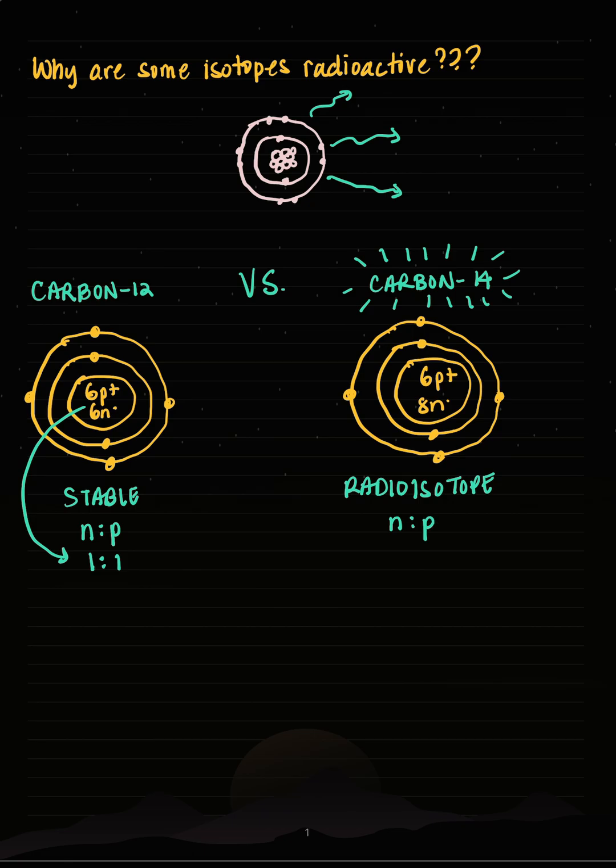Radioactive isotopes have a neutron-to-proton ratio that's off balance. So in this case, there's more neutrons in carbon 14, and if we do the math, it's 1.33 to 1. So this is too heavy, there's too many neutrons, that will make it unstable and want to decay.